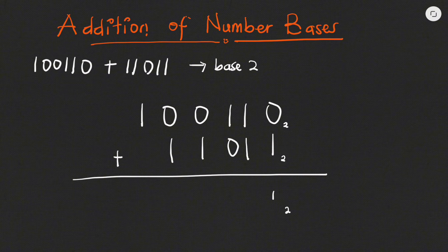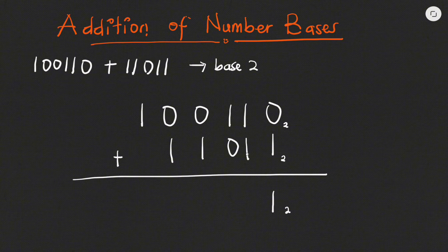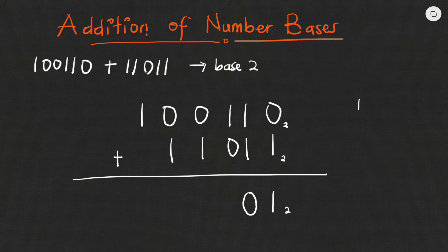It's not more than two so we write the one. Now one plus one is two. Since we are dealing with base two, we ask ourselves: how many times will the base — the two — go into the two we got from adding one to one? The base, which is two, goes into two once. Once it goes in once, it will remain zero, so we write the remainder zero and carry the one.